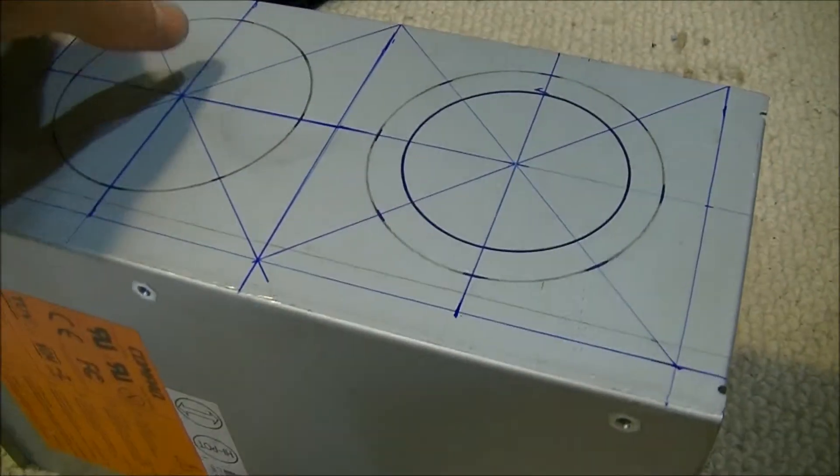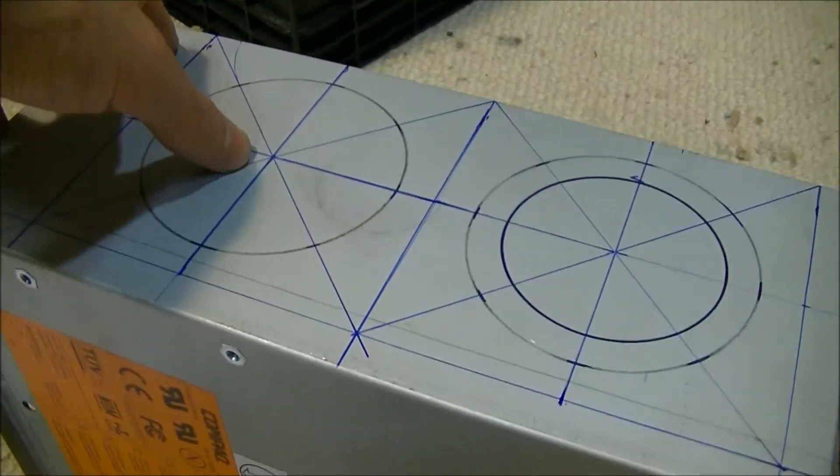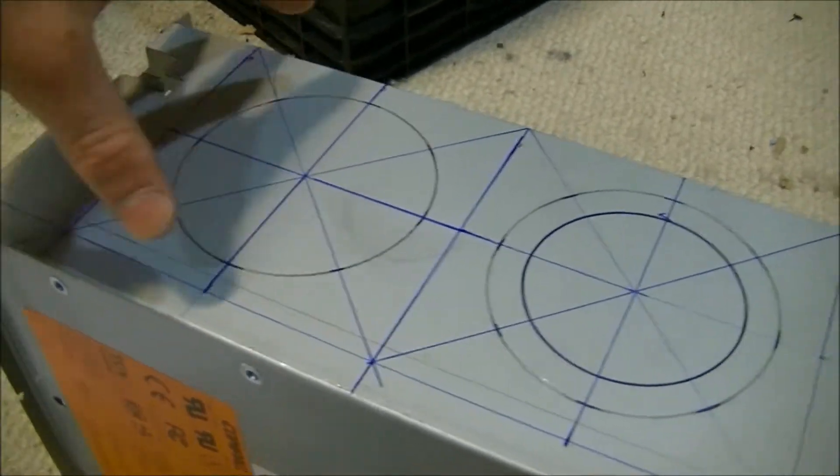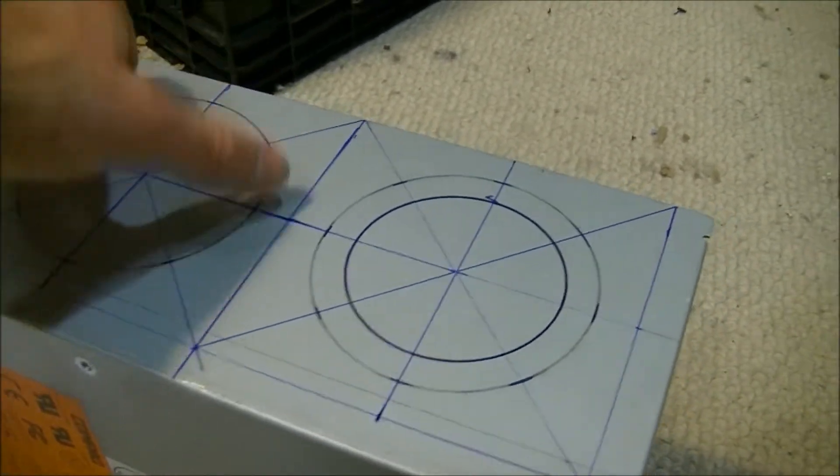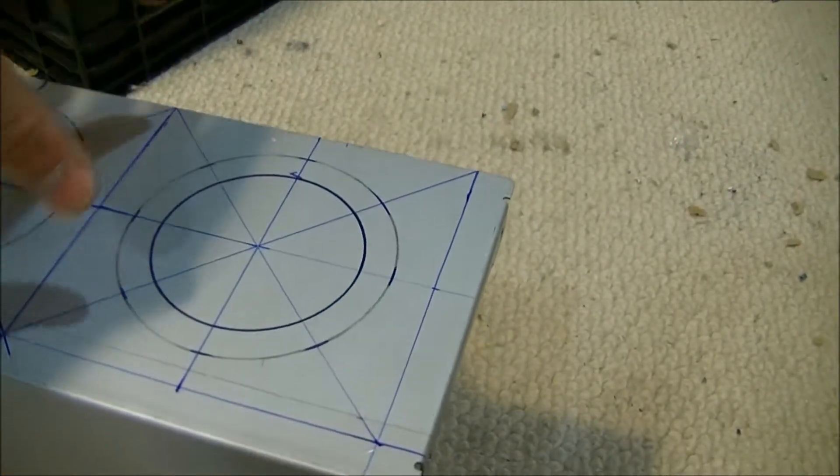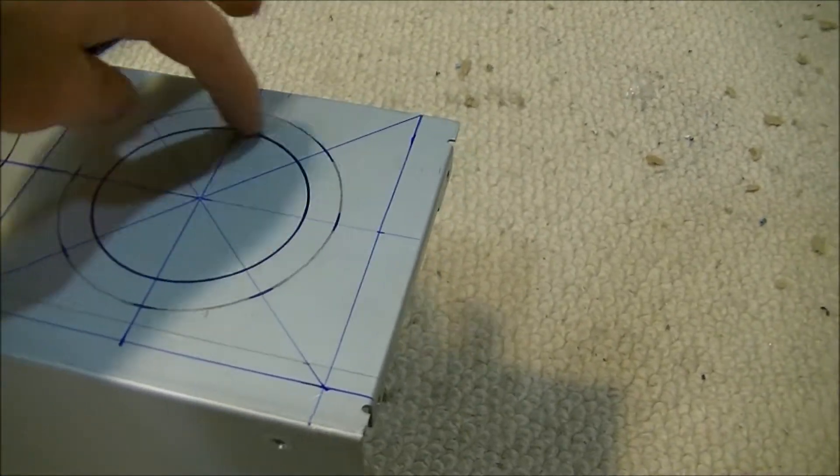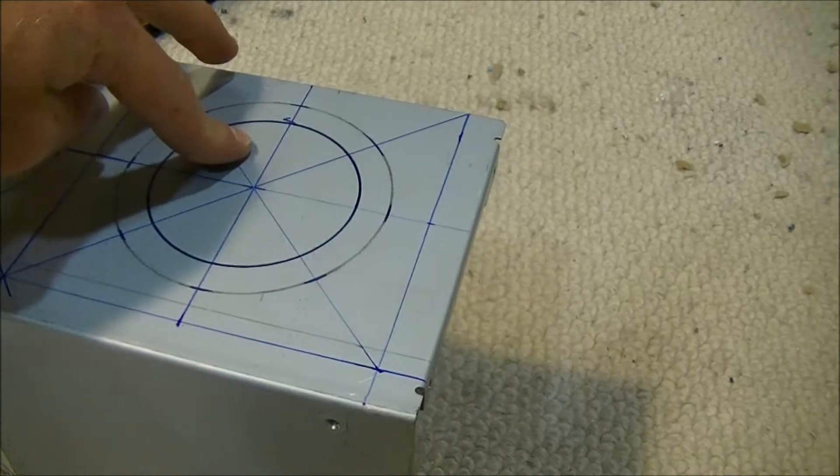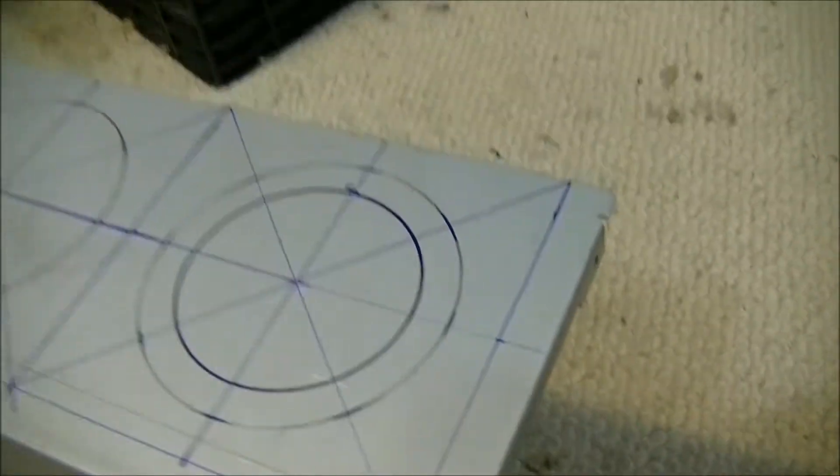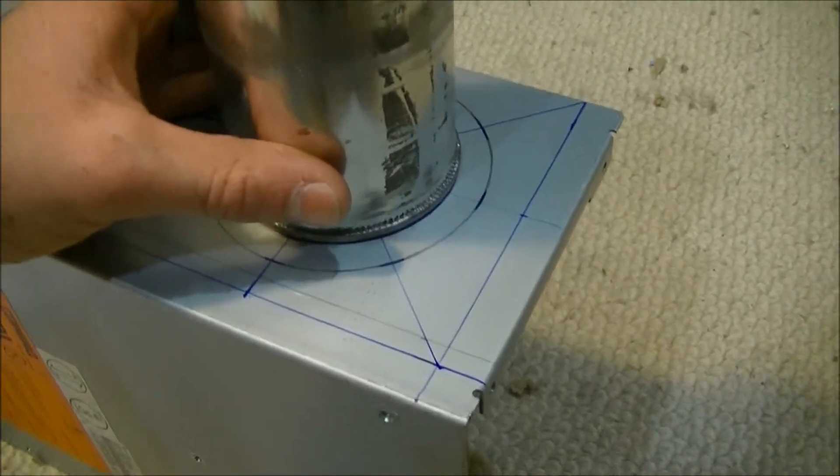They look pretty nice. So this one's just gonna have a hole in the top for the displacer rod and then eight holes for the bolts. Both of them will have those. And then this one will have this whole circle cut out here in the middle and that will be where the displacer can will be soldered on like that.